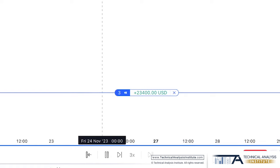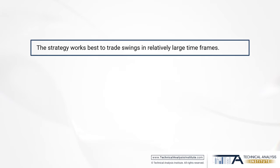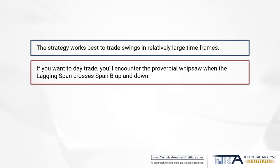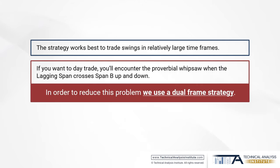Now let's consider the following. This trade is a hypothetical one and it functions very well as shown, and it would be great if we are trading swings in relatively large time frames — probably above an hourly chart. But if you want to day trade, this approach will probably not work well because you will encounter the proverbial whipsaw when the lagging span crosses span B up and down. In order to reduce this problem we use a dual frame strategy.